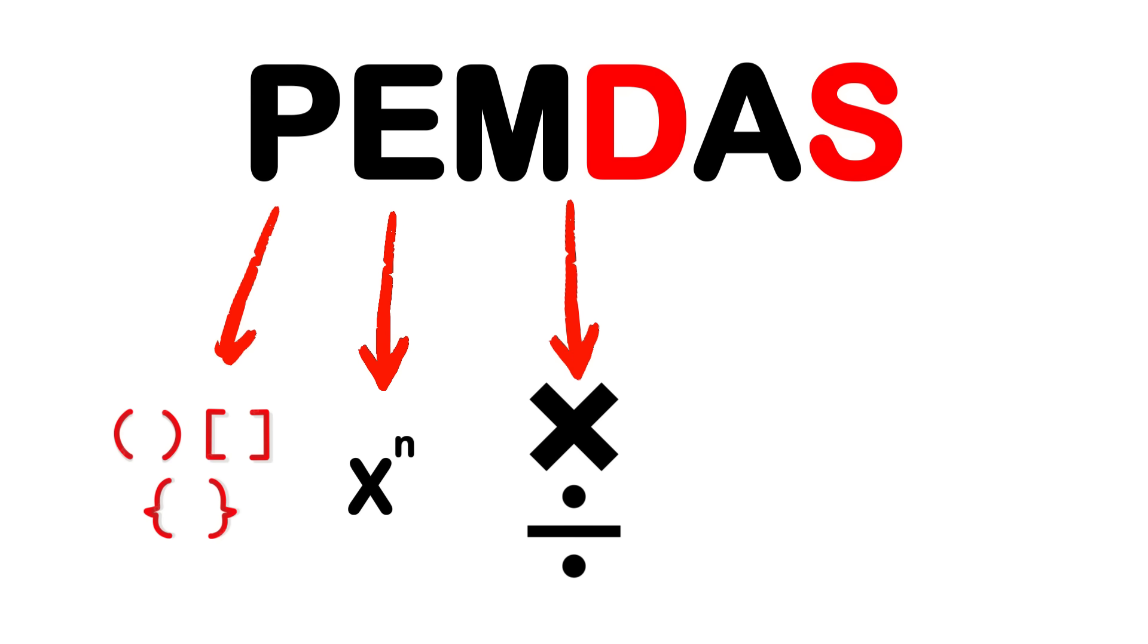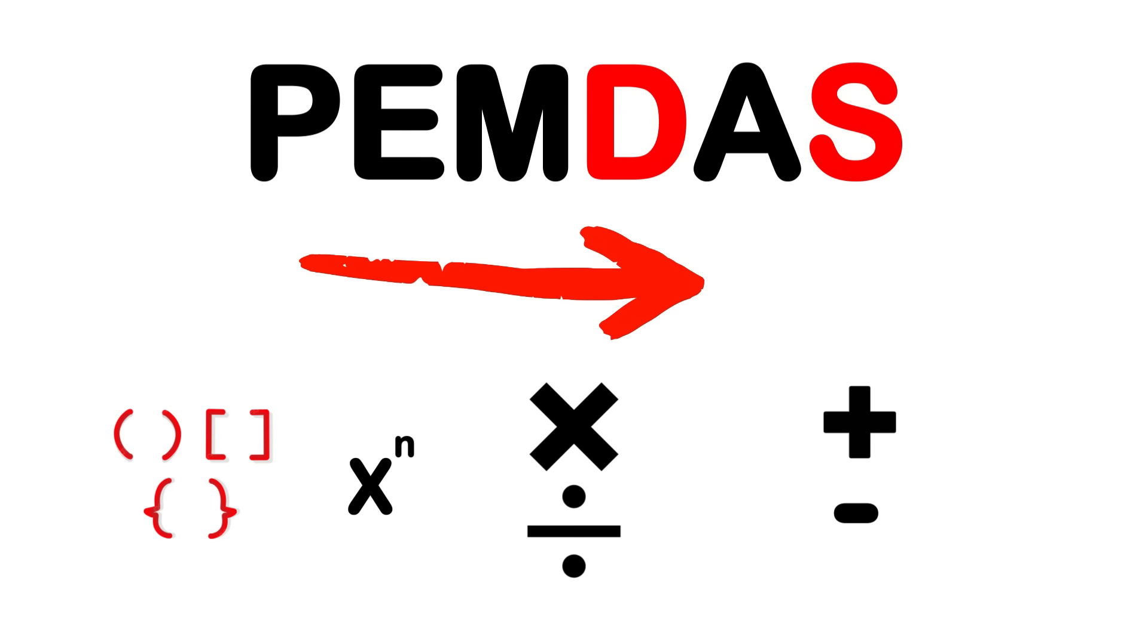All right, let's break down the PEMDAS rule properly. It stands for: P for parentheses, E for exponents, M and D for multiplication and division—remember they have equal priority. A and S for addition and subtraction—these also have equal priority. These operations must be performed in this exact order to ensure the correct result.